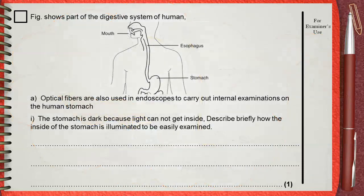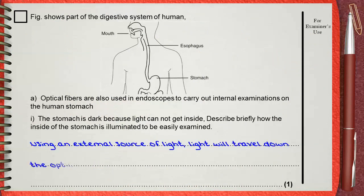So, to answer this question, using an external source of light, light will travel down the optical fiber by successive total internal reflections until it reaches the stomach.